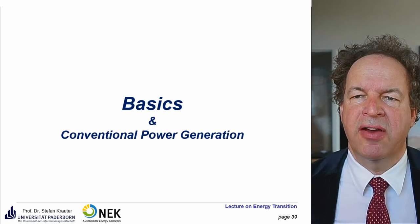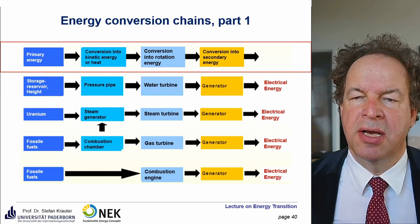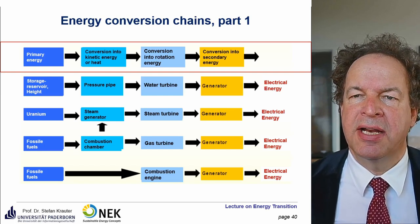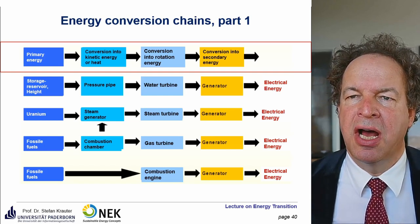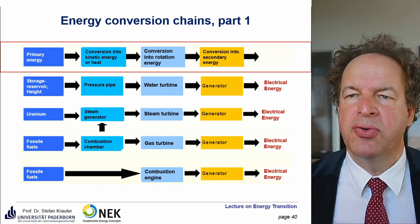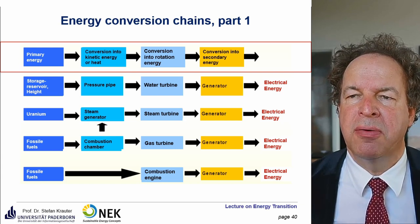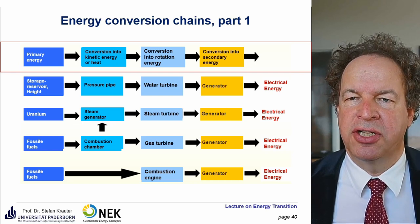For today we have basic and conventional power generation. The basic outline is we have primary energy, we convert that into kinetic energy or heat, and then we convert that into rotation energy, which we then convert into a secondary energy — mostly electrical energy.